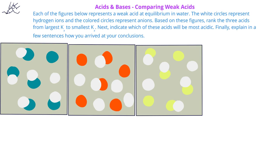Using these figures, we're asked to rank the three acids from largest value of acid dissociation constant to the smallest value of the dissociation constant. After that, we're asked to indicate which one of these three acids will be most acidic. Finally, you should include a few sentences to explain how you arrived at your conclusion.